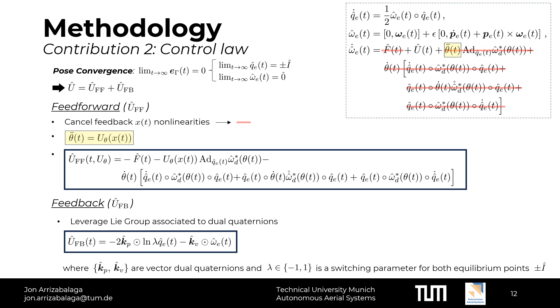Regarding the feedback term, we leverage the logarithmic mapping associated to the Lie group of unit quaternions to design a proportional derivative PD feedback. Notice that the lambda term is a switching term that guarantees convergence to a stable equilibrium point. Putting both the feedback and feedforward terms together, we obtain the control law used in this work. Notice that the feedback term introduced in the feedforward component, the one highlighted in yellow, still needs to be defined. To do so, we proceed to the third contribution, where we lay out the conditions to ensure stability.